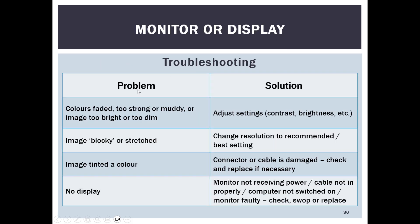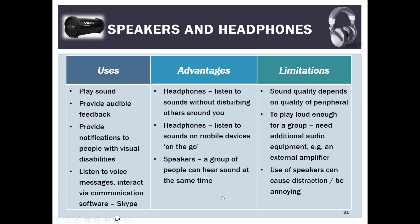For monitor troubleshooting: colors may be faded or too strong — just adjust the settings. If the image is blocky, stretched, or pixelated, change the resolution. A tinted color is usually caused by a VGA connector with a damaged pin, which may need replacing — this is why HDMI is preferable. If there is no display, the monitor might not be receiving power, not plugged in, not connected, or faulty.